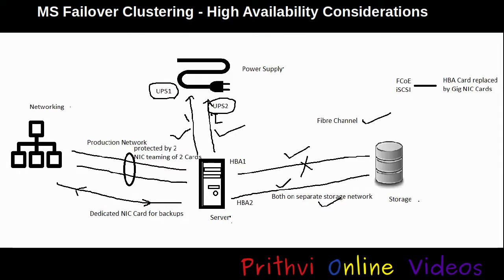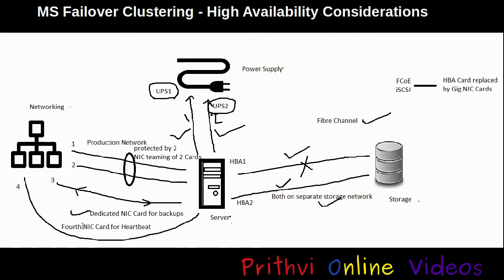I would also recommend having a fourth NIC card dedicated for internal heartbeating. This is the network over which our server will communicate with the secondary server in the failover cluster. Having the internal heartbeat network and backup network on the same NIC card can cause both servers to stop talking to each other during a NetBackup operation, so a dedicated heartbeat NIC is the best solution.